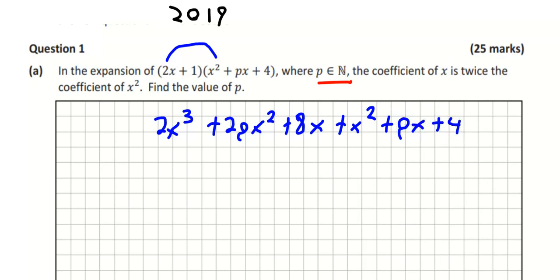Now, what we're going to do is group these. So we have the 2p and the 1x, so it's going to be plus 2p plus 1 times x squared. We still have our 2x cubed, which is here. And then we're looking at the x's, we can see that's px plus 8x, which is p plus 8 times x. And then we have our plus 4 at the back.